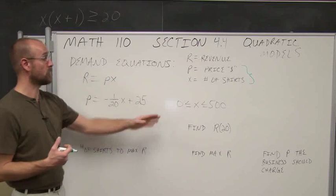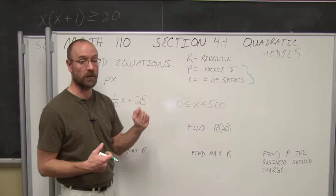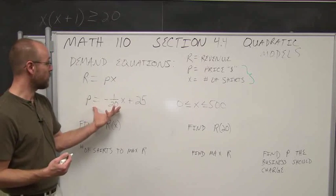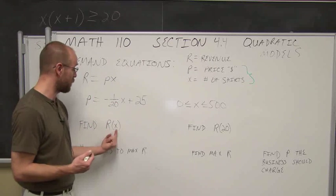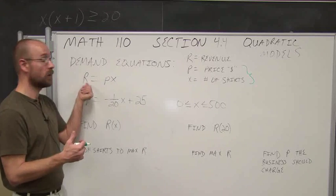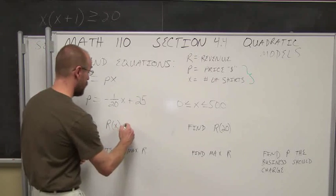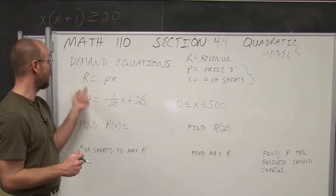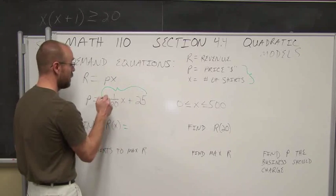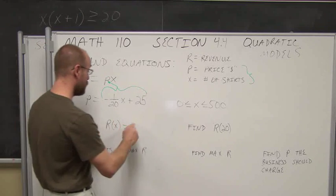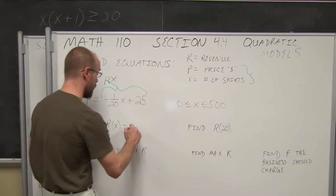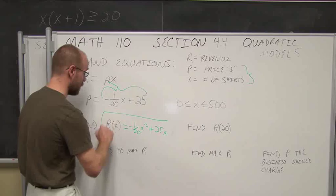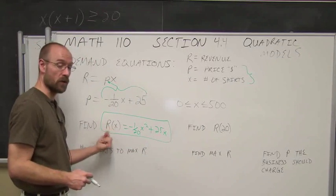For our given example, a company sells shirts and we have a supply from 0 to 500 of these shirts, and we're going to sell them at some price p. This is our demand equation — our relationship. The first part is to find the revenue as a function of x. I know p in terms of x, so I can substitute and distribute x to get R(x) = -1/20 x² + 25x.